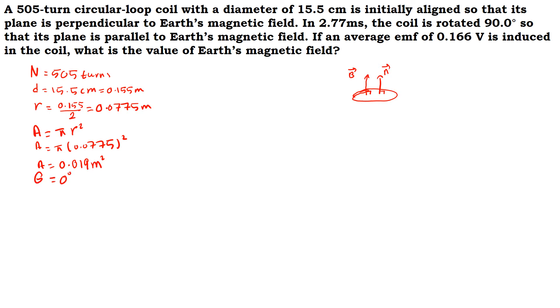In 2.77 milliseconds, the time delta T is 2.77 milliseconds. We convert it to seconds, then delta T will be equal to 2.77 times 10 to the power of negative three seconds. The coil is rotated 90 degrees, so we have a change in the angle.